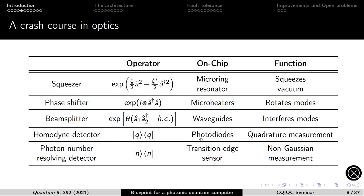The two measurements available are homodyne detectors, implemented on chip with photodiodes, which implement quadrature measurements — homodyne is used to perform Pauli measurements on qubits. The other valuable measurement is the photon number resolving detector, implemented with a transition edge sensor, which currently requires cryogenic components. All other components are so-called Gaussian operations, but photon number resolving detectors allow you to go outside Gaussian space, generating negativity in the Wigner function and enabling the generation of approximate GKP qubits.